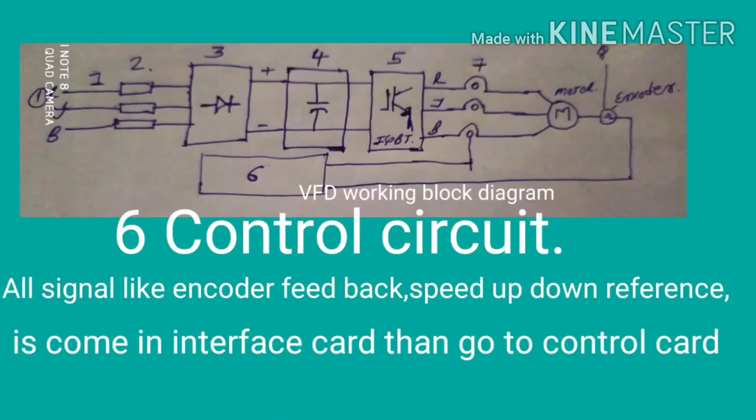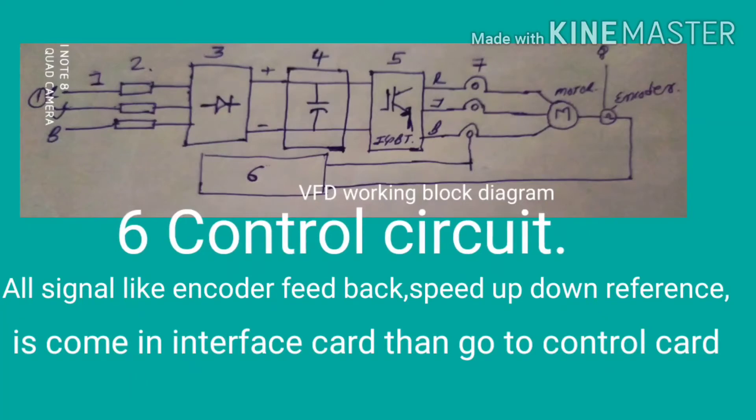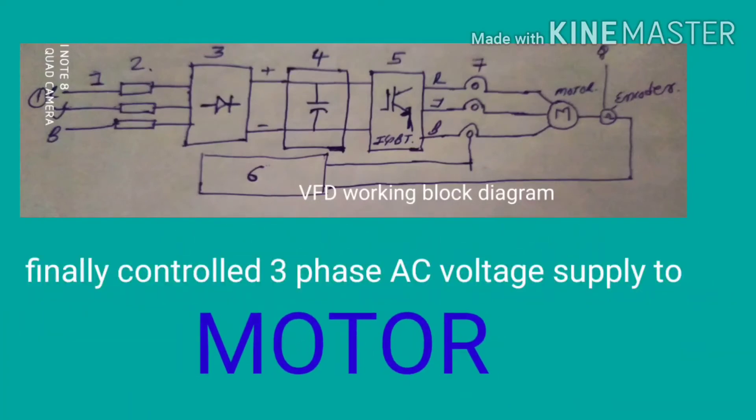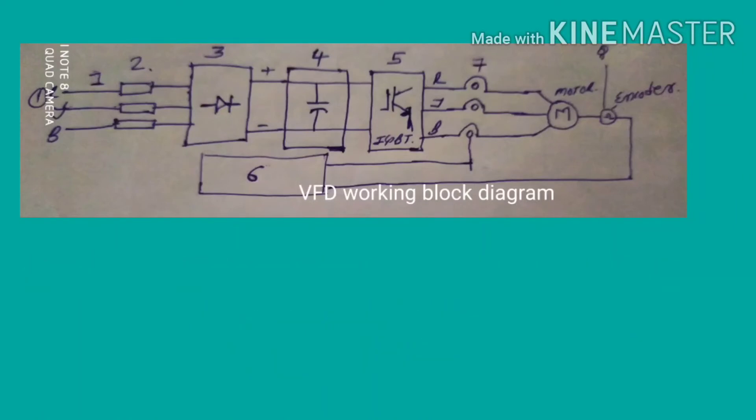IGBT switch on and off is managed by control section. Here trigger card, interface card, and control card is mounted. All signal lines—encoder feedback, speed up, down reference—come in interface card, then go to the control card. Finally, control three-phase AC voltage is supplied to the motor. Seventh is the three-phase AC supply and eighth is the encoder feedback signal. Thank you for watching this video.